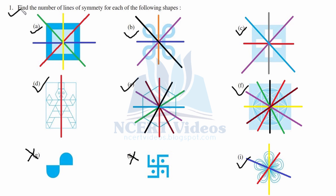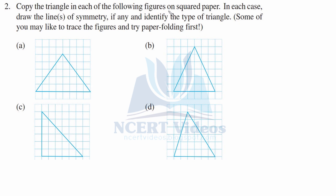Question two: copy the triangle in each of the following figures on squared paper, draw the lines of symmetry if any, and identify the type of triangle. Part A is an isosceles triangle because only two sides are equal — each measuring six units. Isosceles triangles have only one line of symmetry, which is vertical, going from the top vertex to the midpoint of the opposite side.